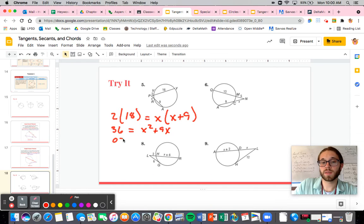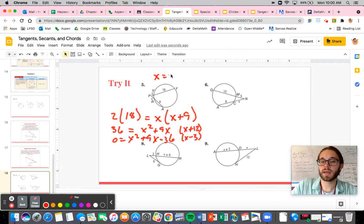So I have zero is equal to X squared plus nine X minus 36. So if I factor that, it should be X plus 12, X minus three. So my two solutions here are negative 12 and three. Now, naturally, if I plug in negative 12 here, that makes no sense. So my answer needs to be three.